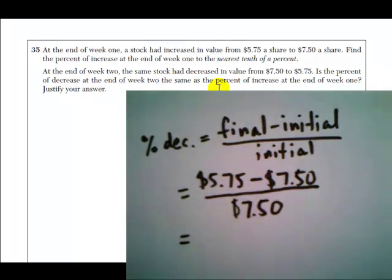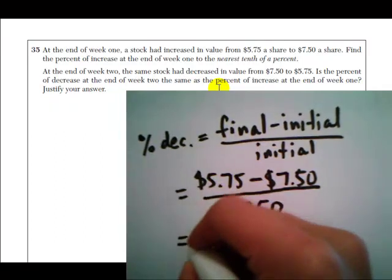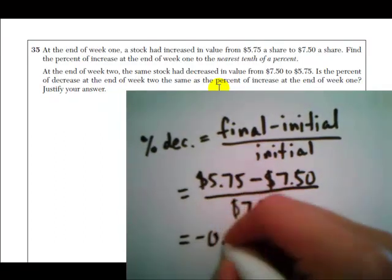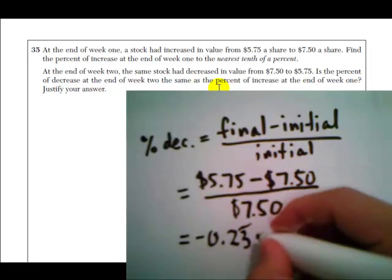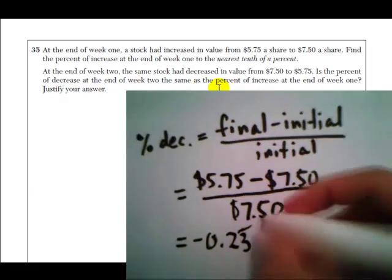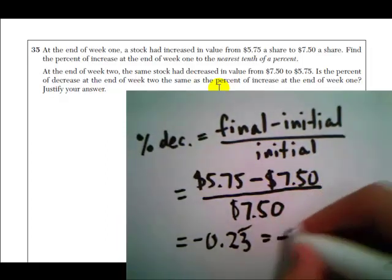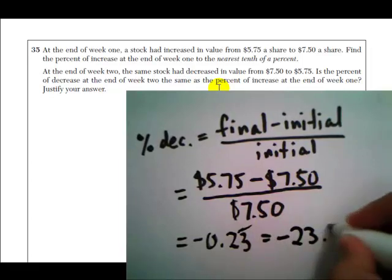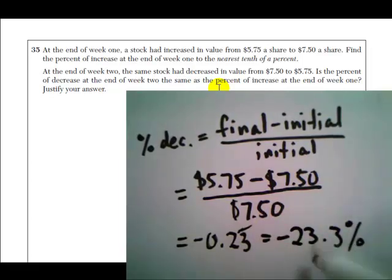And that's why this value is going to be different from the value we calculated in the first part. So if we do 5.75 minus 7.5 and divide that by 7.5, we find out that this comes out to be negative 0.23 with the three repeating. So this is a percent decrease of 23.3%. Remember what we got in the first part, which was 30.4%. So these are different values.